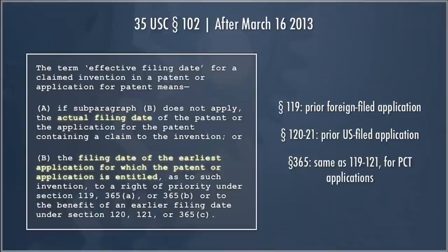What do we mean by an effective filing date? Section 102 describes it as either the actual filing date — the date the patent office receives your application — or the filing date of the earliest application for which the patent application is entitled given priority rules. You can claim priority and thereby get an earlier date. So if I file a patent application today, I can in some cases claim a priority date for calculating prior art based upon an earlier filed application.